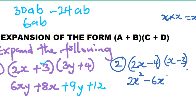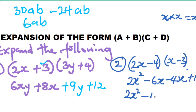2x has finished its work. Now minus 4 does its work: minus 4 times x gives minus 4x. Then minus 4 times minus 3: minus times minus gives plus, so 4 times 3 is 12, giving plus 12. We have minus 6x and minus 4x as like terms, so combining: 2x² − 10x + 12.